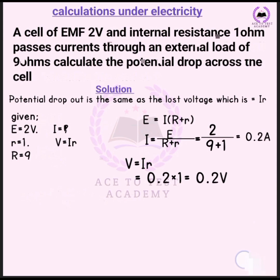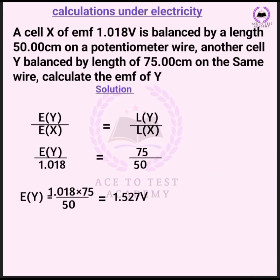Another question: a cell X of EMF 1.0 V is balanced by a length of 50 cm on a potentiometer wire. Cell Y is balanced by a length of 75 cm on the same wire. Calculate the EMF of Y. Using the formula: EMF of Y over EMF of X equals length of Y over length of X. So EMF of Y = (75 ÷ 50) × 1.0 = 1.5 volts.